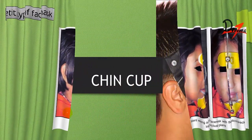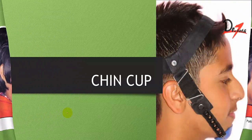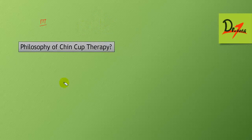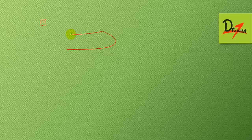The chin cup is an extra-oral orthopedic device useful in the treatment of class 3 malocclusion that occurs due to a protrusive mandible. In the case of chin cup use, the maxilla is relatively normal, but the problem lies with a protrusive mandible.